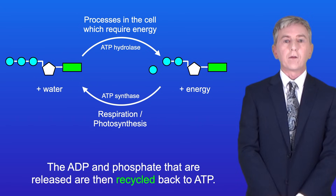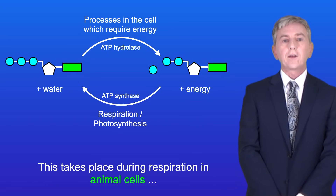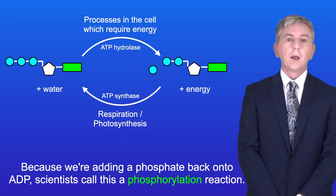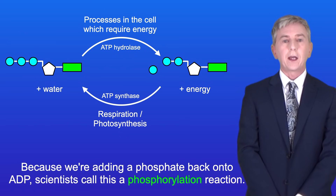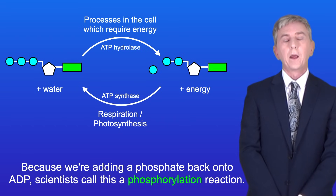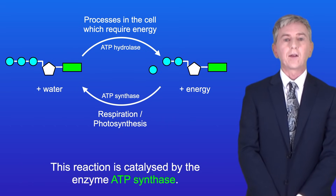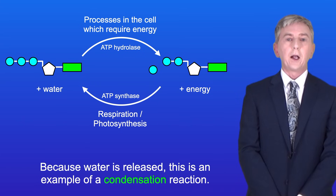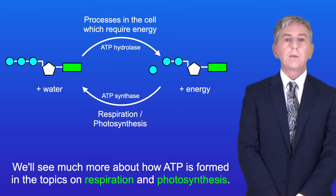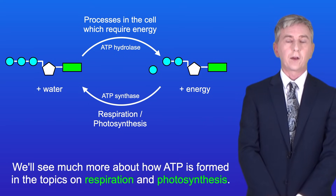The ADP and phosphate that are released are then recycled back to ATP. This takes place during respiration in animal cells, and in both respiration and photosynthesis in plant cells. Because we're adding a phosphate back onto ADP, scientists call this a phosphorylation reaction. This reaction is catalyzed by the enzyme ATP synthase, and because water is released, this is an example of a condensation reaction. We'll see much more about how ATP is formed in the topics on respiration and photosynthesis.